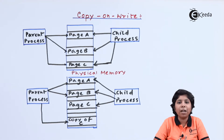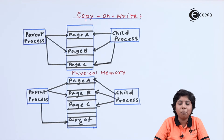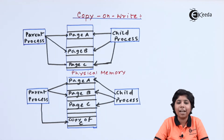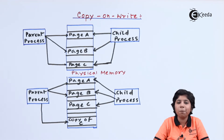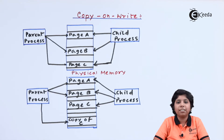All pages that need to be copy on write are marked at the time of process creation, and we can only modify a page while it is marked copy on write. Unmodified pages are shared between parent and child. Pages that cannot be modified, such as executable code, should not be marked copy on write and are simply shared. This implementation is generally accepted in operating systems such as Windows XP, Solaris, and Linux.